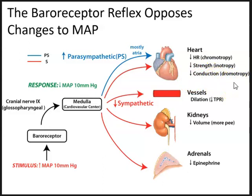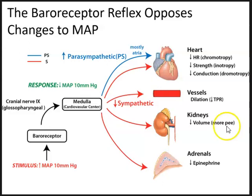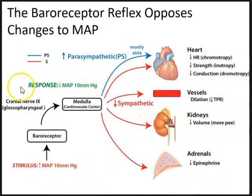Basically there will be decreased effects on the heart. In response to increased pressure, the cardiovascular center will also decrease the amount of sympathetic effects going to the effectors. This causes vasodilation to decrease total peripheral resistance, decreased blood volume through increased urination from the kidneys, and decreased release of epinephrine from the adrenal glands — all in response to increased blood pressure, so that the appropriate response is to decrease blood pressure.